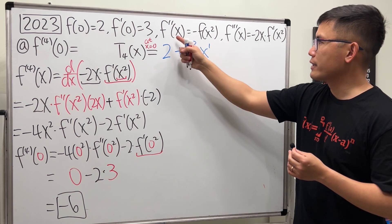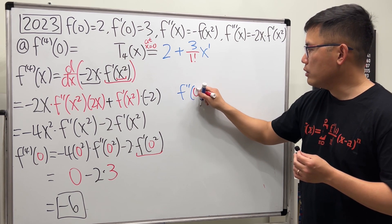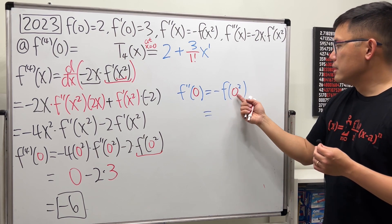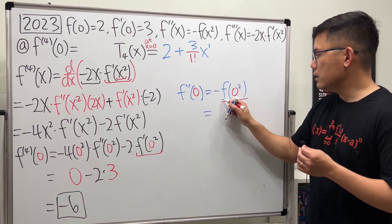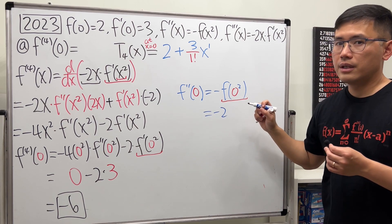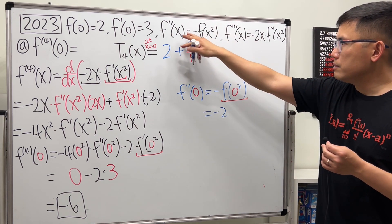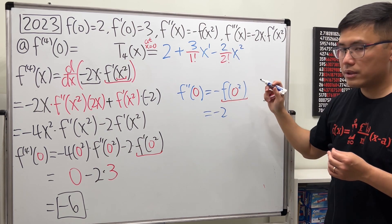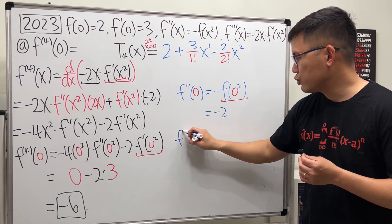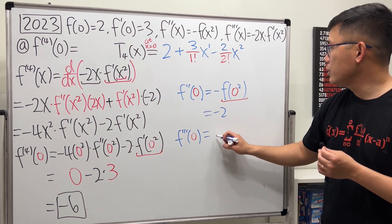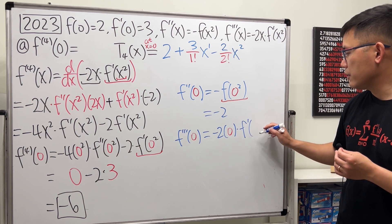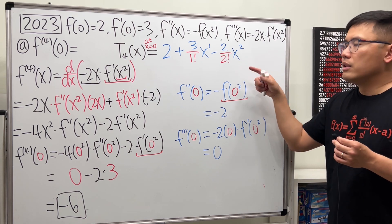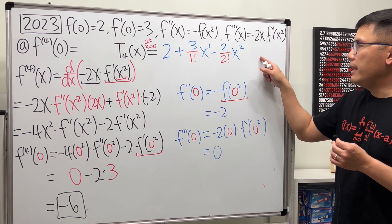Continuing, we need the second derivative. f double prime of 0 equals negative f of 0 squared, which is negative 2 squared, but f of 0 is 2, so we have negative 2. For the second derivative term, that's negative 2 divided by 2 factorial times x squared. Then we need the third derivative at 0: f triple prime of 0 equals negative 2 times 0 times f prime of 0 squared. Thanks to that zero factor, everything is 0. So the third-degree term is 0 divided by 3 factorial times x cubed, which is 0.